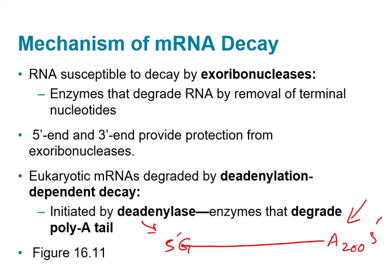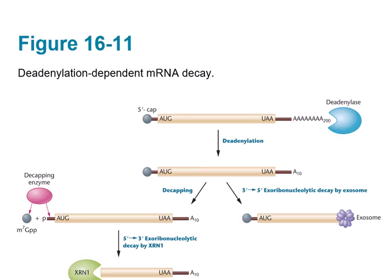The first thing that happens is based on exoribonucleases on the 3' end. An enzyme starts breaking down the polyA tail — that is a deadenylase enzyme, involved only in the removal of the polyA tail. This deadenylase enzyme breaks it down to a level where it can be taken care of by some other enzyme.